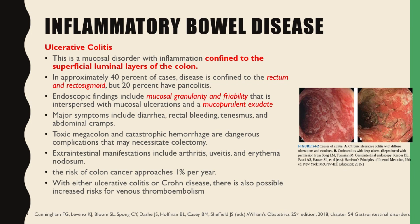For ulcerative colitis, this is a mucosal disorder with inflammation confined to the superficial luminal layers of the colon. In approximately 40% of cases, the disease is confined to the rectum and rectosigmoid, but 20% have pancolitis. Endoscopic findings include mucosal granularity and friability, interspersed with mucosal ulcerations and a mucopurulent exudate. Major symptoms include diarrhea, rectal bleeding, tenesmus, and abdominal cramps. Toxic megacolon and catastrophic hemorrhage are dangerous complications that may necessitate colectomy. Extraintestinal manifestations include arthritis, uveitis, and erythema nodosum.